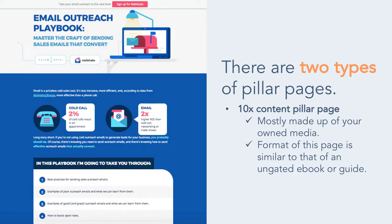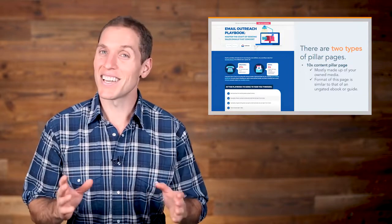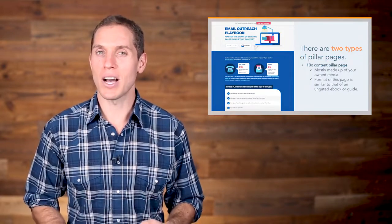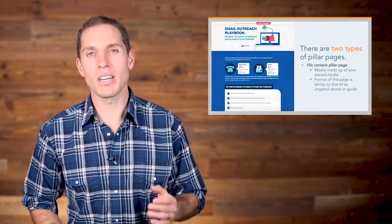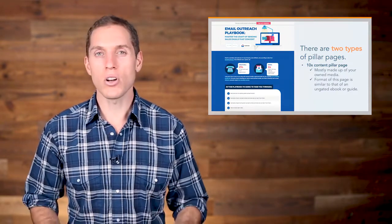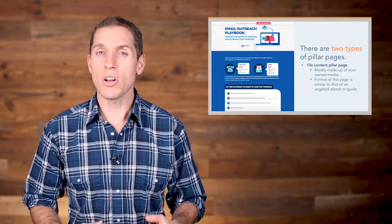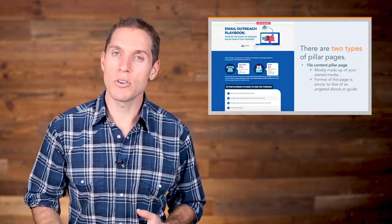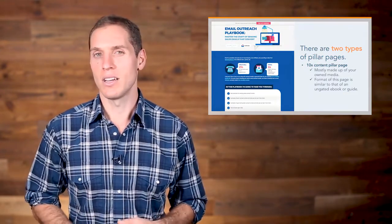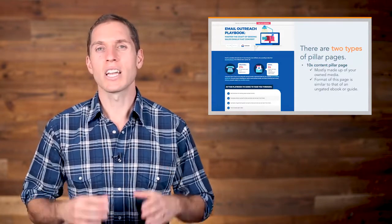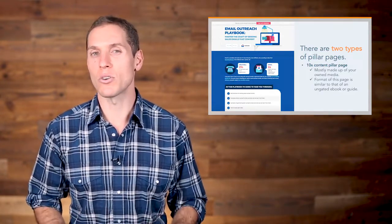Next is the 10x content pillar page. The goal of this type of pillar page is the same — to provide a comprehensive overview of a specific topic — but the 10x pillar page is generally made up of your owned media. The format of this page is similar to that of an ungated ebook or a guide. Yes, I said ungated content. Ungating thought leadership content in the awareness stage solves for both the search engine and the website visitor, not one or the other. It solves for the search engine because they're able to recognize the clustering of like-themed content on a specific subject. And it solves for the website visitor because it gives them the opportunity to view your content before deciding to commit to downloading it. The trick is making the 10x content pillar page conversion-focused by packaging the page's content into a downloadable resource.